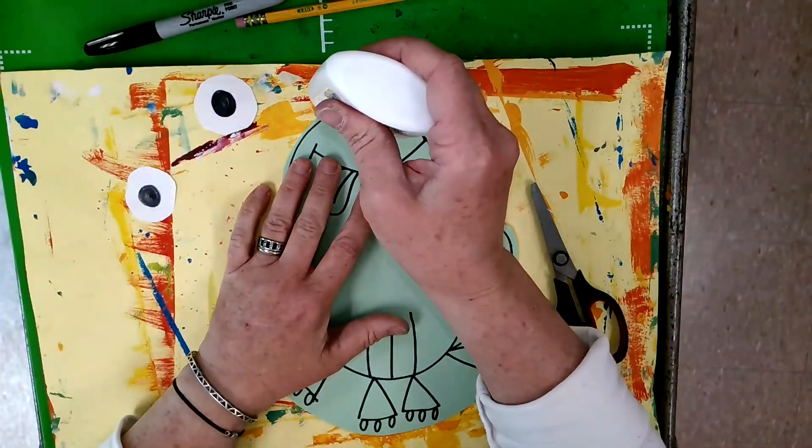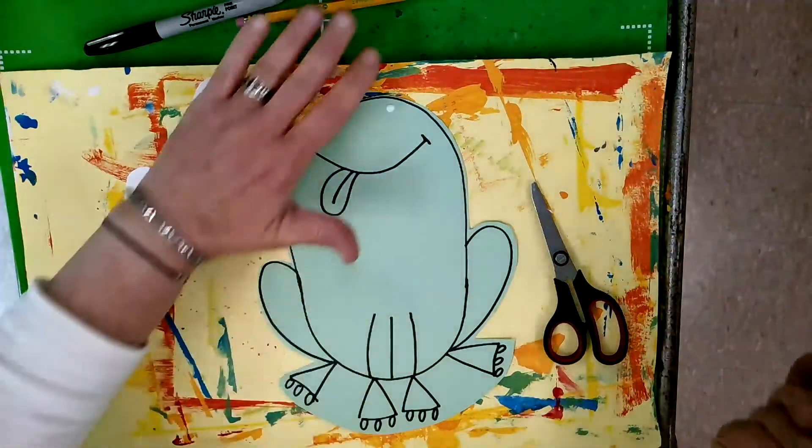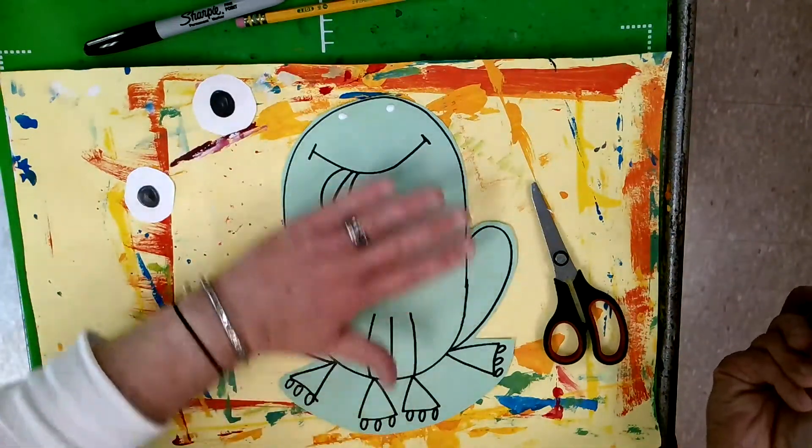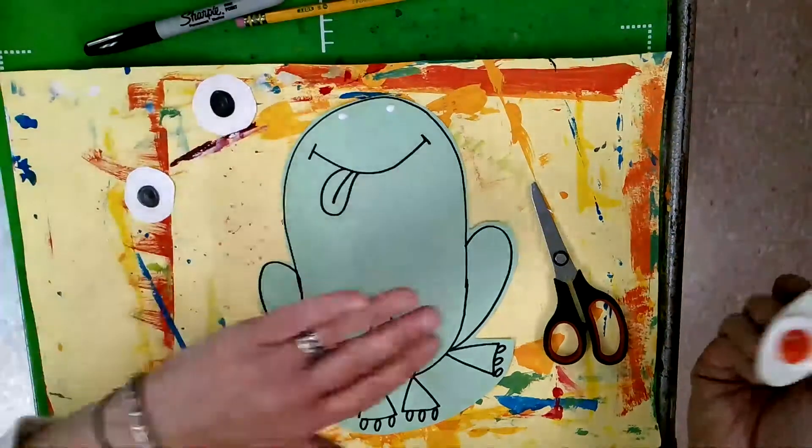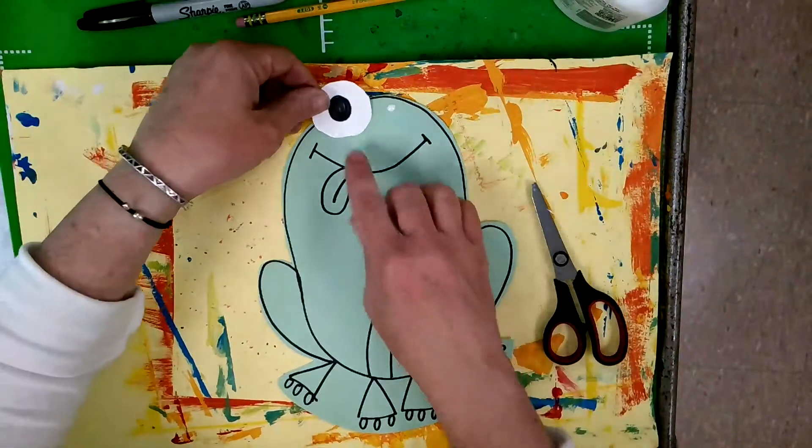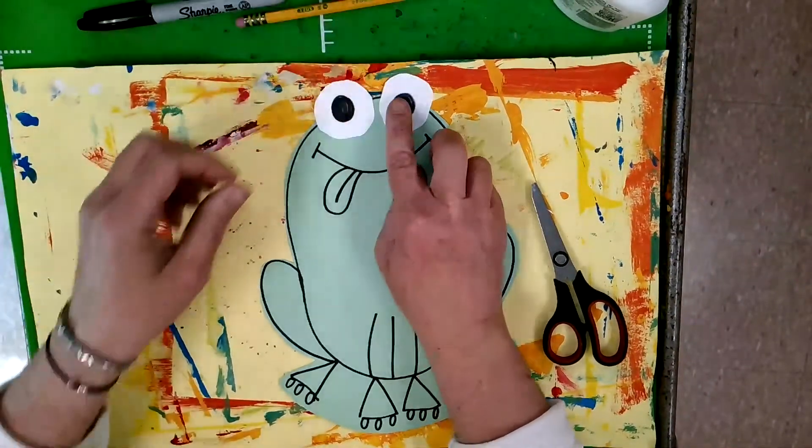I'm going to add a dot of glue. You can use a glue stick or white glue, either one will work fine. And again, if you did this on white paper, I would color this in first, whatever color you want your frog to be, either with paint or crayons or markers, and then glue the eyes on top. I wouldn't glue the eyes on and then color it. And I'm gonna stick these guys here.